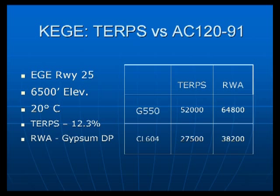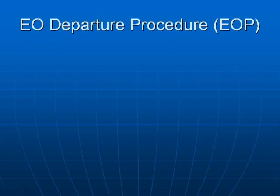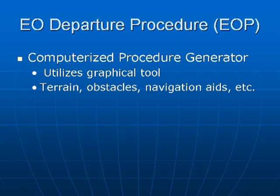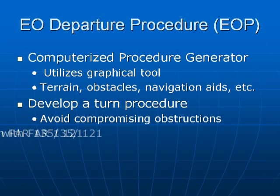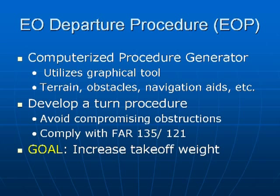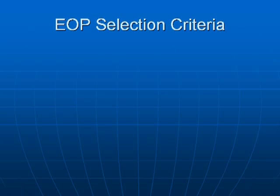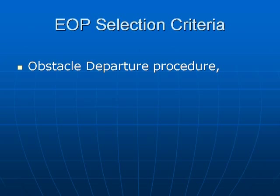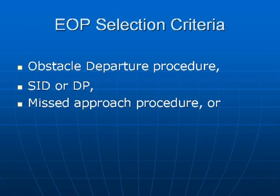An engine-out departure procedure can increase takeoff weight. APG utilizes a computerized procedure generator as a graphical tool to display terrain, obstacles, navigation aids, etc., to develop a turn procedure which will avoid compromising obstructions while complying with FAR 135 and 121, with the goal of increased takeoff weight. APG utilizes the following selection criteria: if there is an obstacle departure procedure for the runway, we will attempt to use it first; if not, we will use a SID or departure procedure if published; then a missed approach procedure; or if the weight is still not satisfactory, we will generate a tailored engine-out departure procedure.